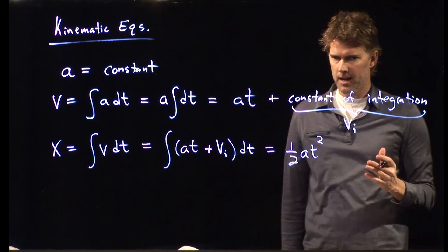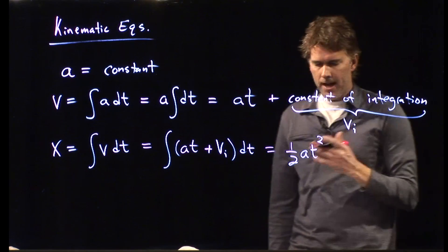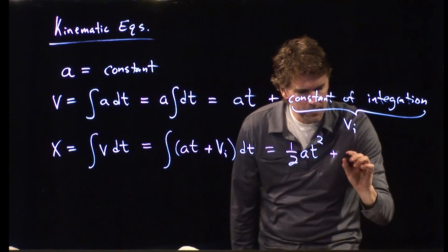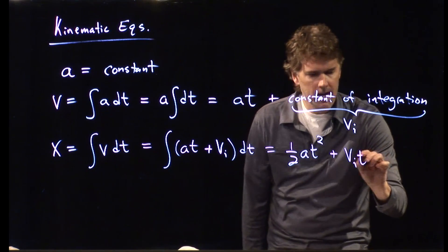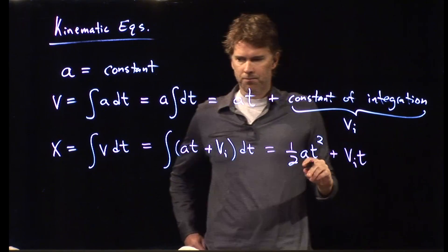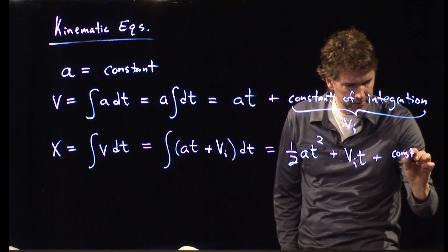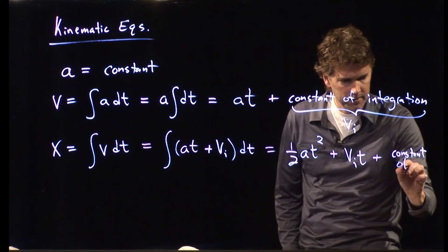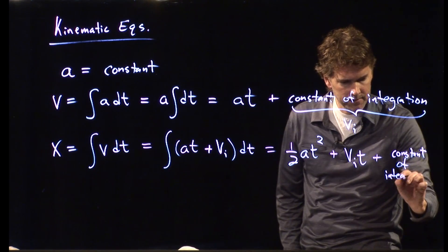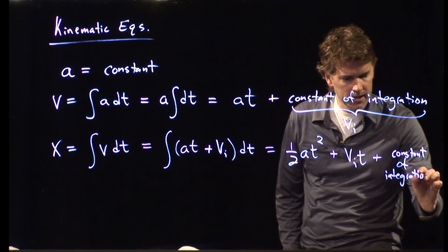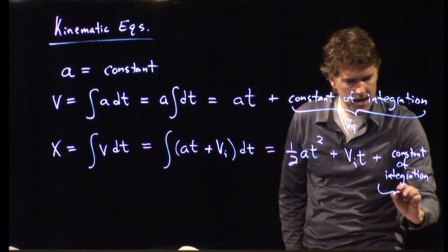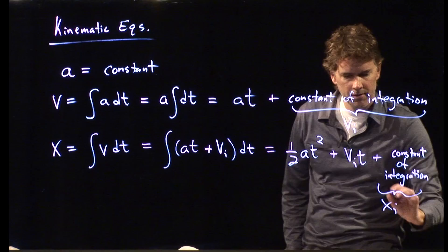Vi is initial velocity, and that's a constant. So, we just add vi times t. And then we have to add another constant of integration. And that constant of integration, we are now going to call x sub i.